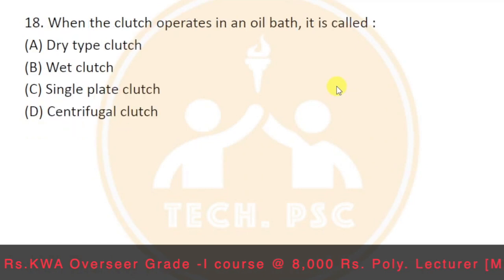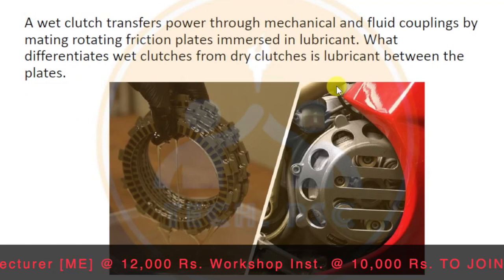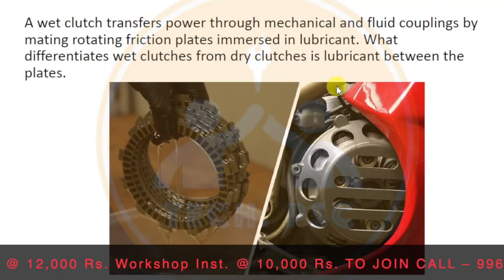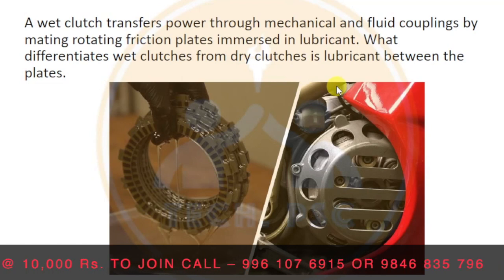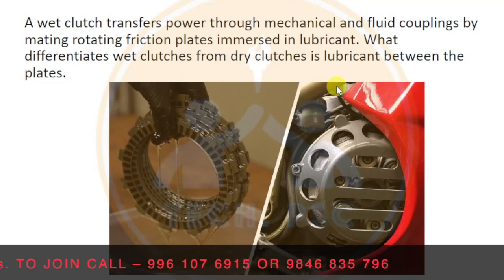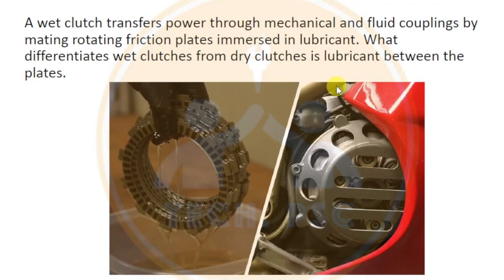When the clutch operates in an oil bath, it is called a wet clutch. A wet clutch transfers power through mechanical and fluid couplings by mating rotating friction plates immersed in lubricant. What differentiates a wet clutch from a dry clutch is that lubricant is present between the plates.